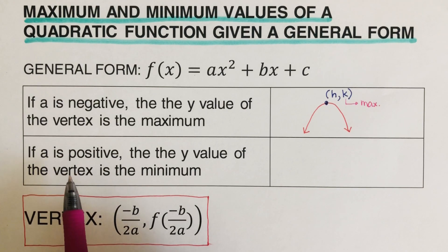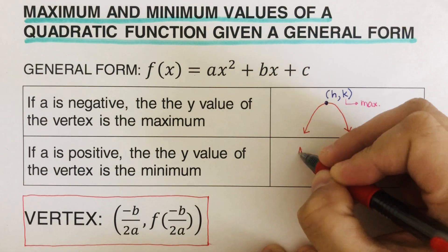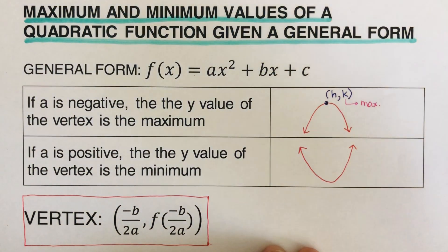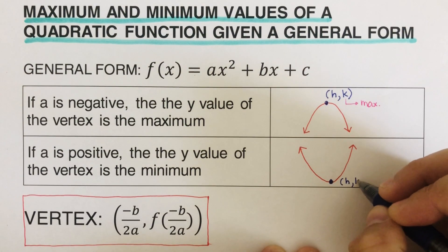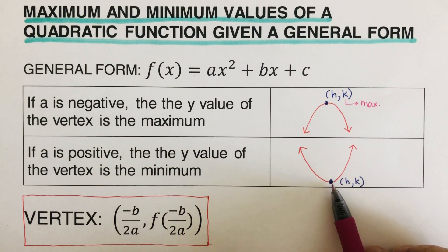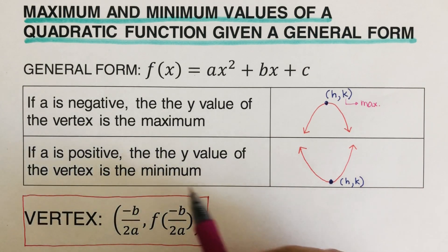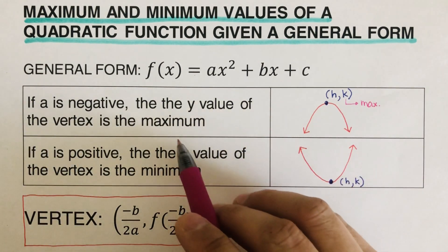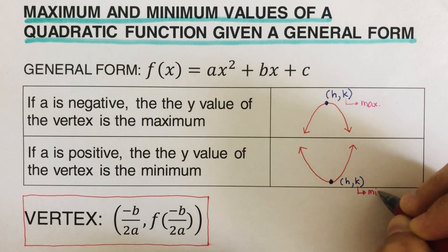Now if 'a' is positive, that's a different case. If 'a' is positive, the parabola opens upward. This point right here is the vertex, again represented as (h, k). Since this is like a valley, this is the lowest point in the valley, and we call this the minimum. So the k value is the minimum.